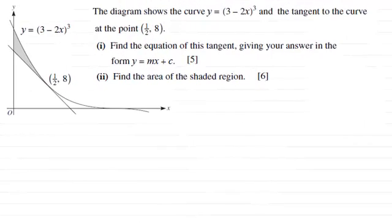Hi there. Now before we start the second part to this question, in the first part, if you saw the video, we had to find the equation of the tangent to this curve y equals 3 minus 2x all cubed at the point x equals a half, y equals 8. And we found that the equation of this tangent was y equals minus 24x plus 20.